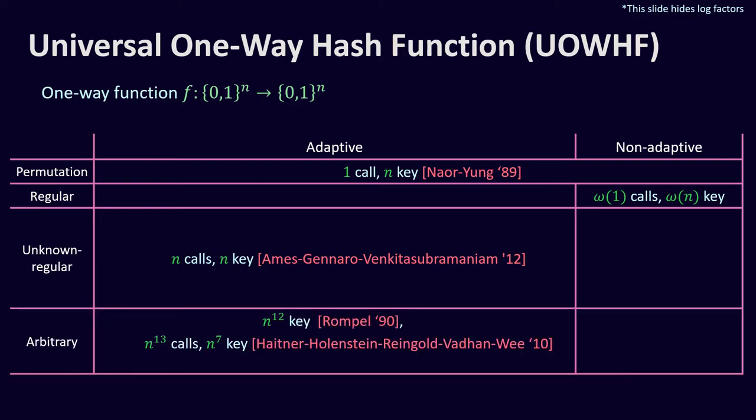Lastly, Rompel proved that we can use any one-way function to construct universal one-way hash functions. Haitner, Holenstein, Reingold, Vadhan, and Wee improved the parameters up to n-to-the-7 key length and n-to-the-13 calls. This is still far from the best PRG constructions, and the only construction we know is adaptive.